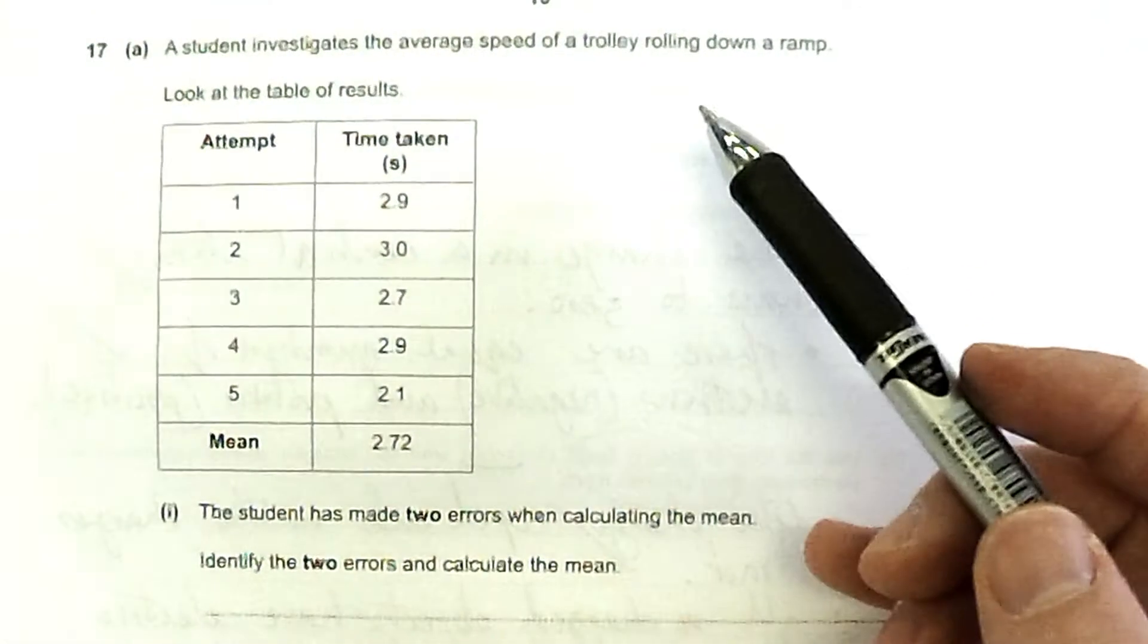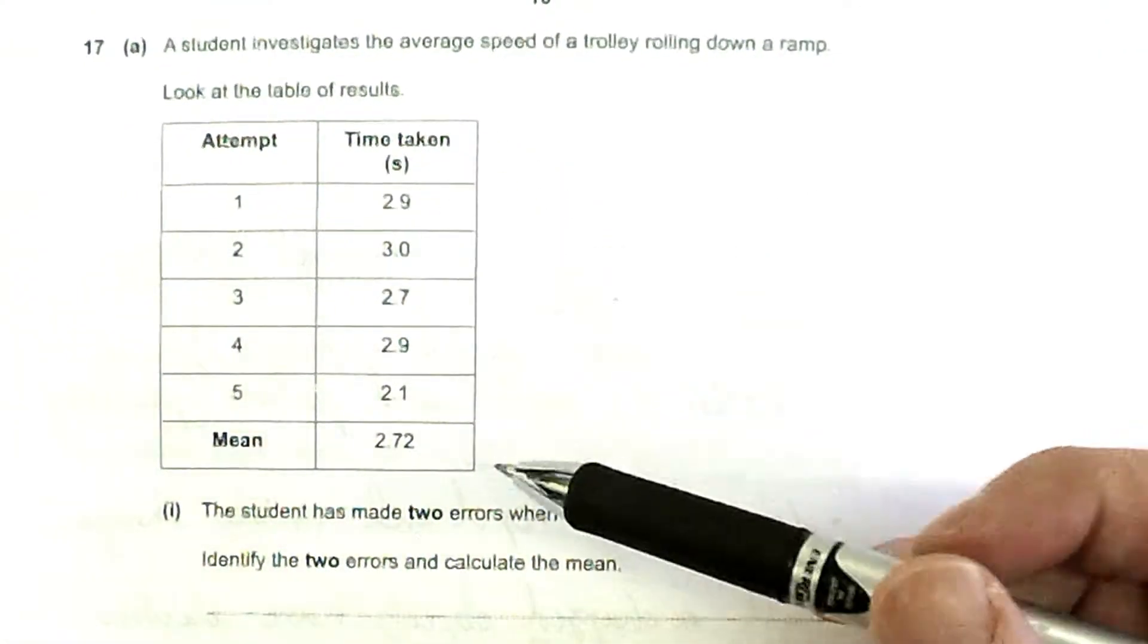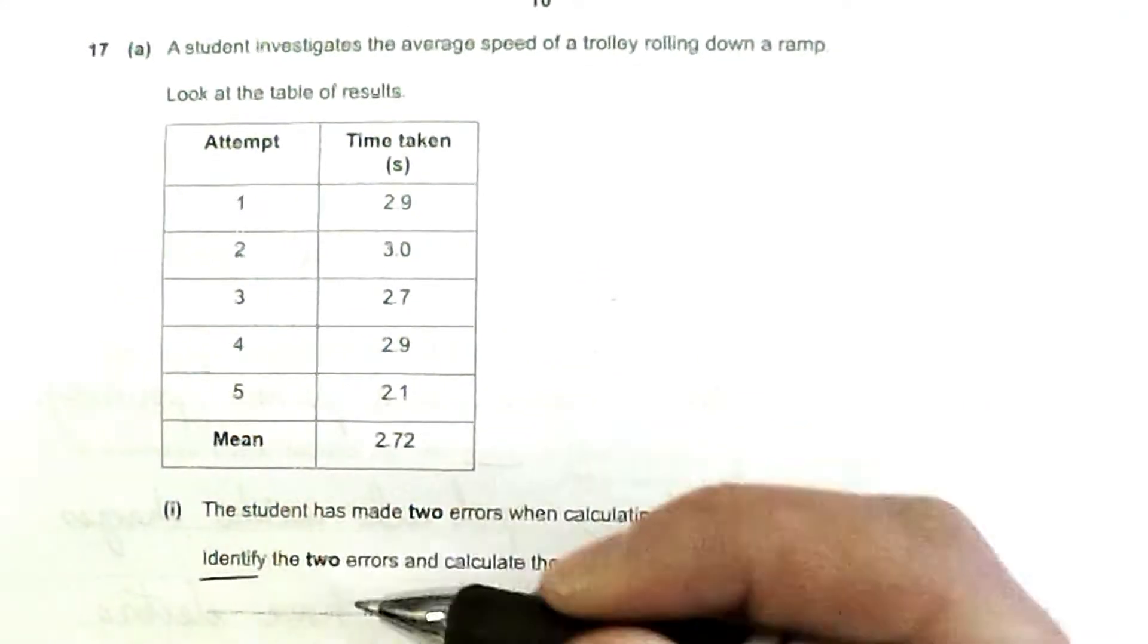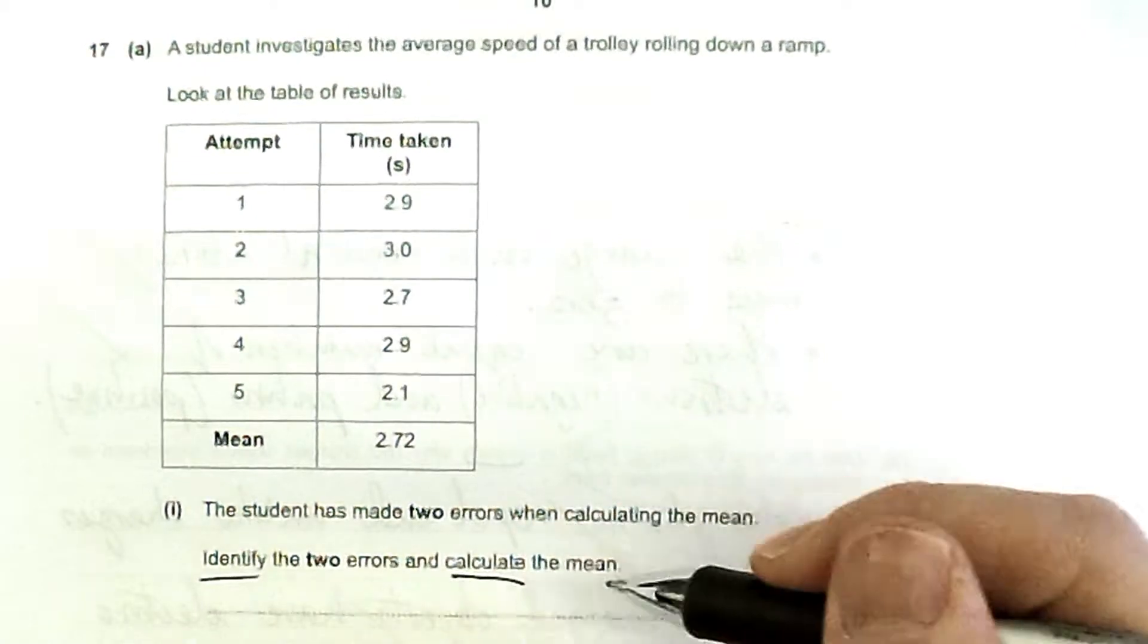Okay, a student investigates the average speed of a trolley rolling down a ramp. Look at the results. A student has made two errors when calculating the mean. Identify the two errors and calculate the mean.